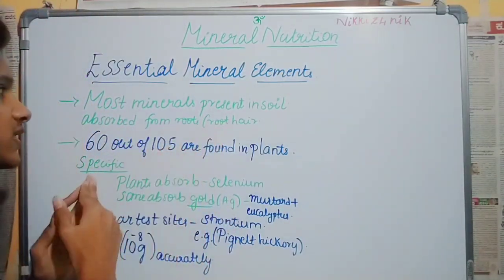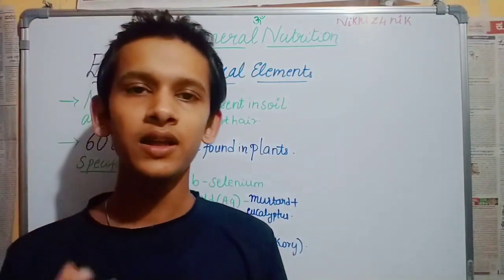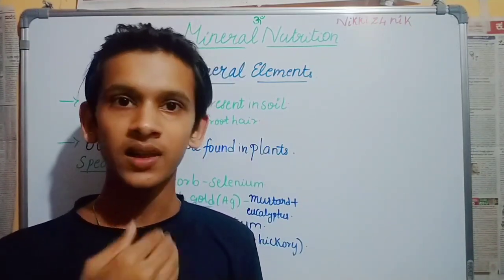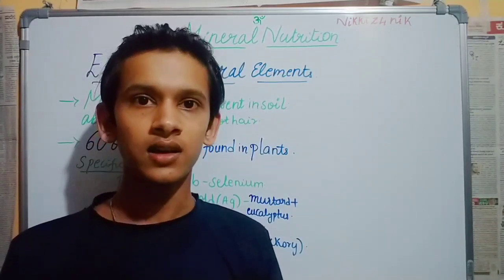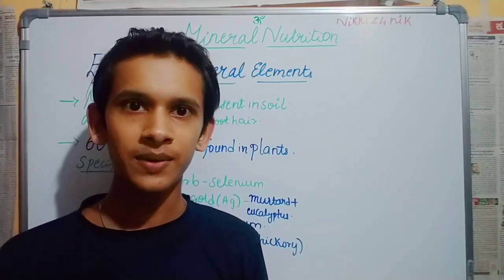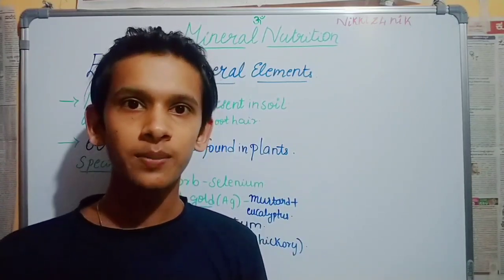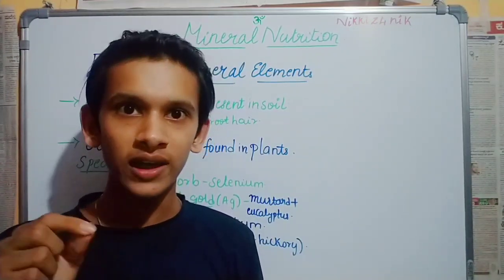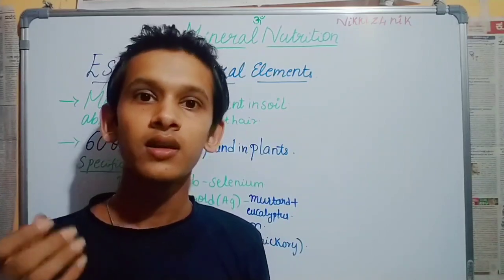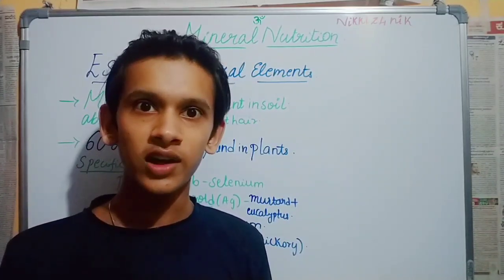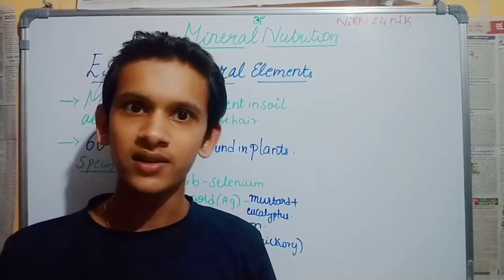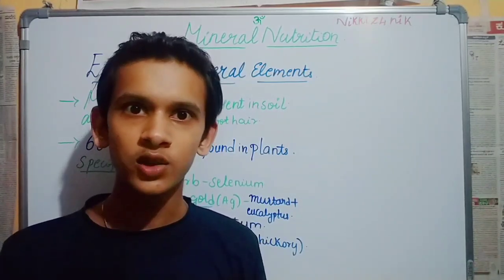Most minerals are present in soil and absorbed from the roots. Plants absorb minerals from the soil through root hairs and structures. There are ions in the soil, and we know that xylem flow carries water and mineral transportation — that is how the plant acquires nutrients from the soil.